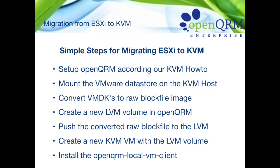I will quickly go over the migration steps and then do a live demonstration. First, set up OpenQRM. Second, mount the VMware datastore where the VMDK virtual machine disk images are located on the KVM host. Third, convert it to a raw block file image. Then push it into an LVM volume pre-created in OpenQRM. From that LVM volume, simply create a new KVM virtual machine, start it, and later install the OpenQRM client for further management.